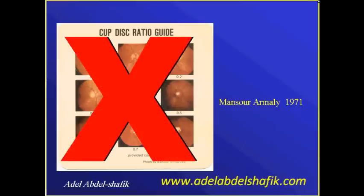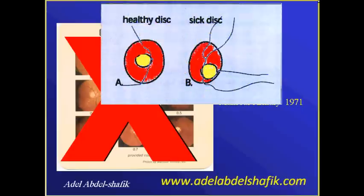Actually, we should abandon using this. These two diagrams get the same size of the cup and the same size of the disc, but in one the cup is central — and this is a healthy disc — while in the other the cup is eccentric, and this is abnormal.